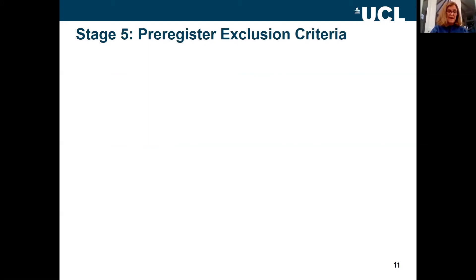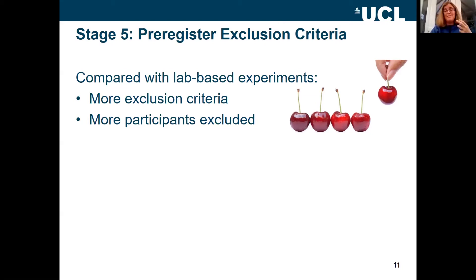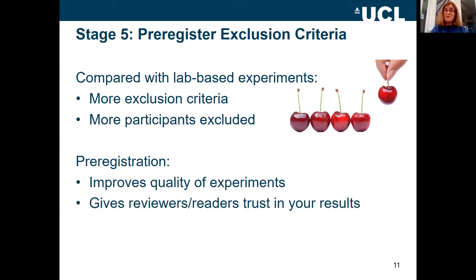I can't emphasise this strongly enough: I would pre-register your exclusion criteria. Compared with a lab-based experiment, it is almost certain that you will be excluding more participants than you would in the lab. If you don't pre-register the reasons for excluding people, you're going to end up looking like you might be cherry-picking your data. You might know you're not, but remember you have to persuade other people.